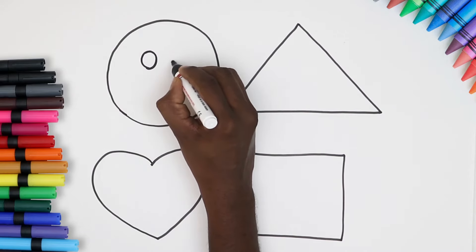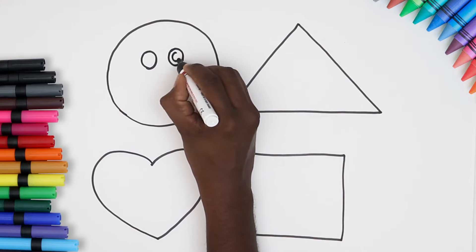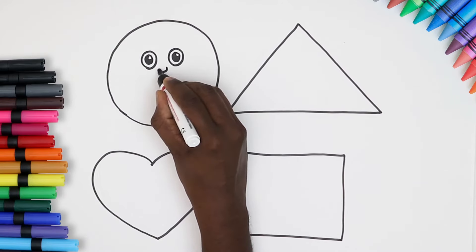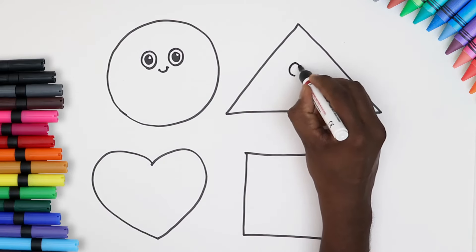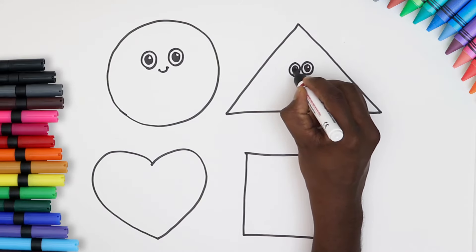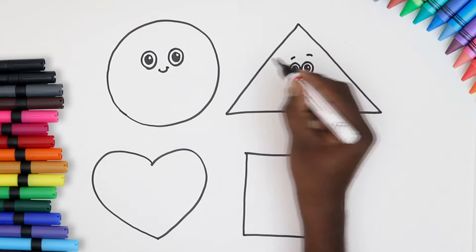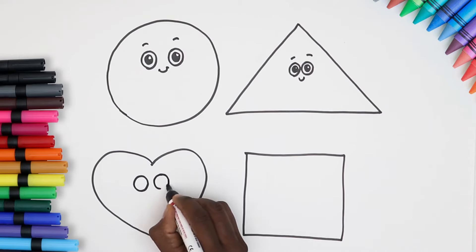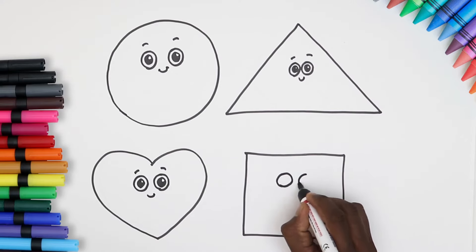It's time to give our shapes happy faces. Draw eyes, colour the pupils in and a cute little smile. A face for a triangle and don't forget the eyebrows. Next a face for the heart and the square too. Don't they look so cute?